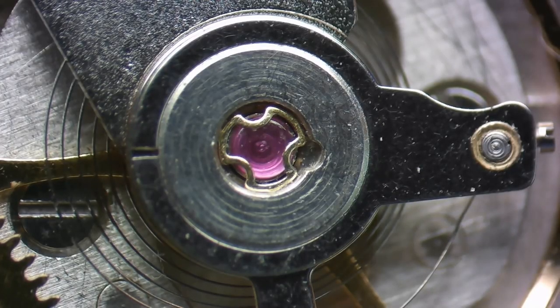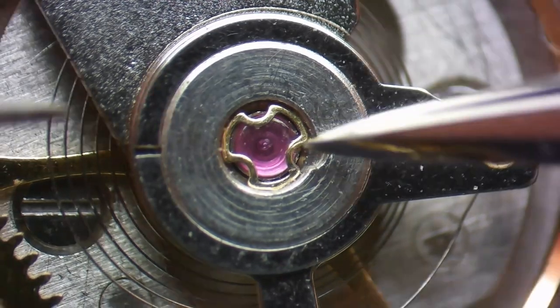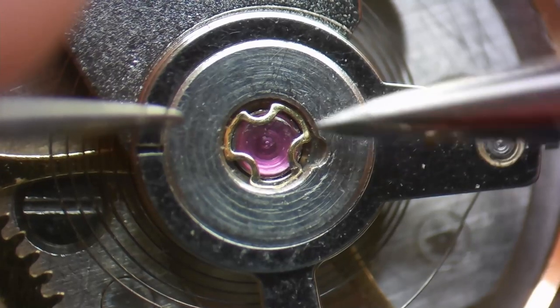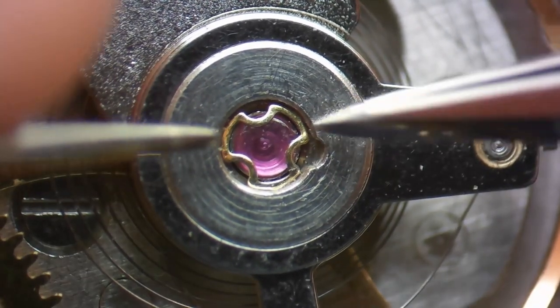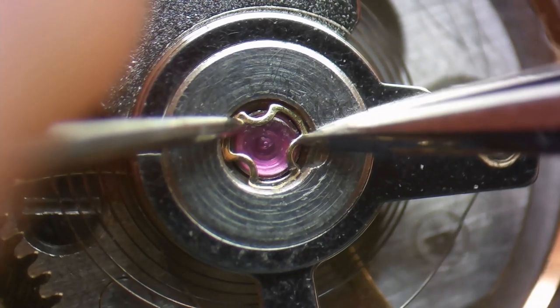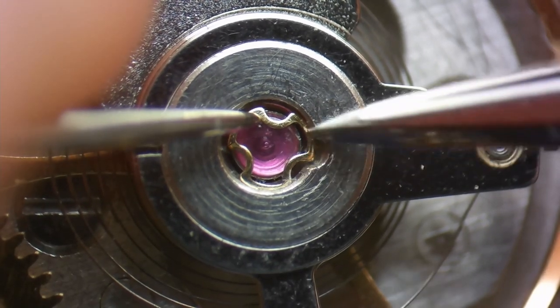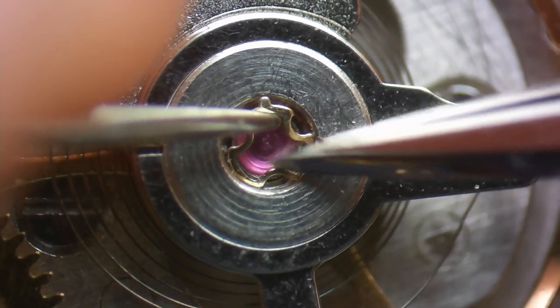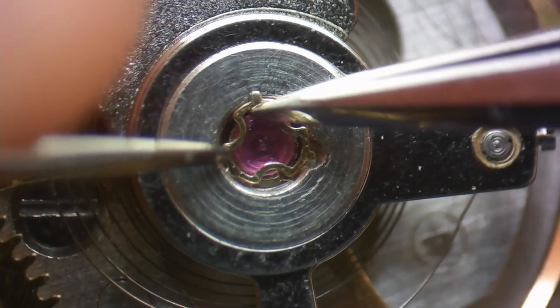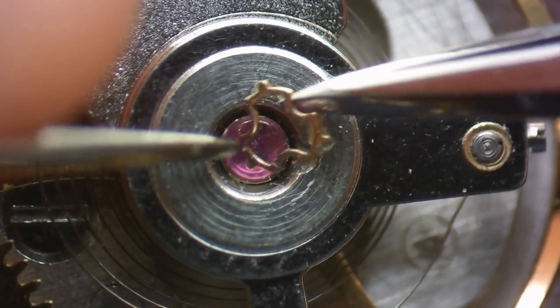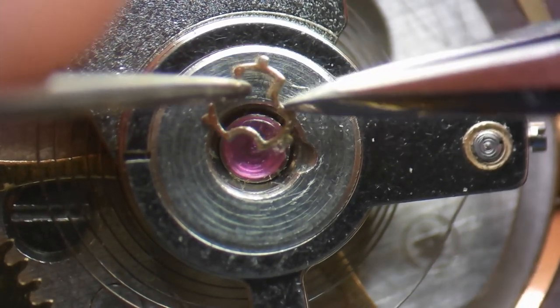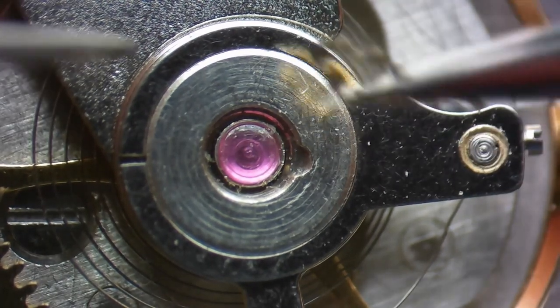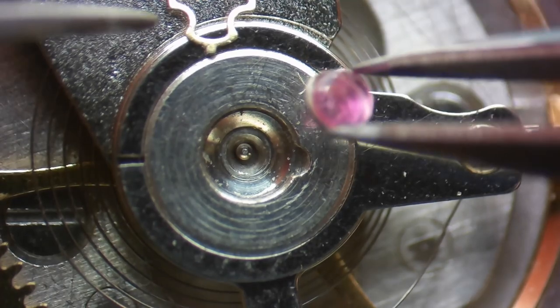Another type of retaining clip that you'll run into is this KIF style. There are three pins on the spring that hold this on top of the end stone. This hole right here is where they come out. So to remove this, you just want to gently turn the retaining spring until it comes out, and then you'll be able to remove the chaton the same way as before.